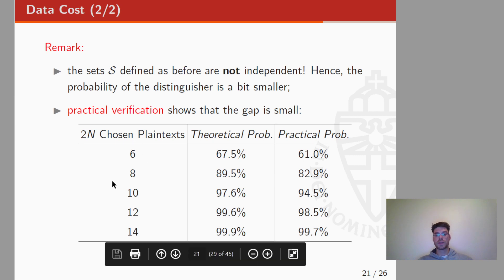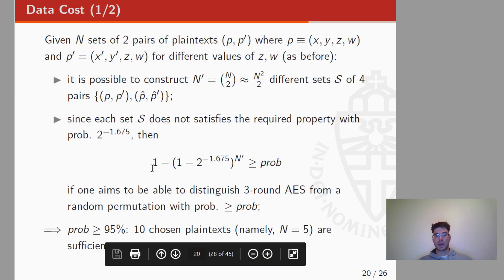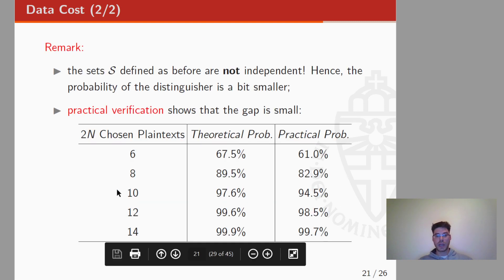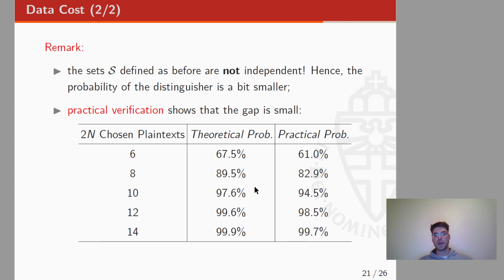To distinguish three rounds of AES from a random permutation with a probability higher than 30%, we need the number n' of different sets to satisfy a certain inequality. For example, for a 95% success probability, we need at least 10 chosen plaintexts. The sets are not fully independent, so the real probability is actually slightly smaller than the theoretical one — this approximation is discussed in detail in the paper. For example, when using 10 chosen plaintexts, the theoretical probability is around 97.6%, while in practice the probability of success is around 95%. The gap is reasonably small.